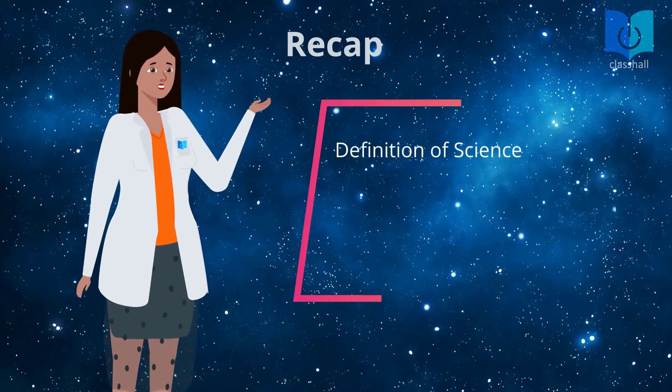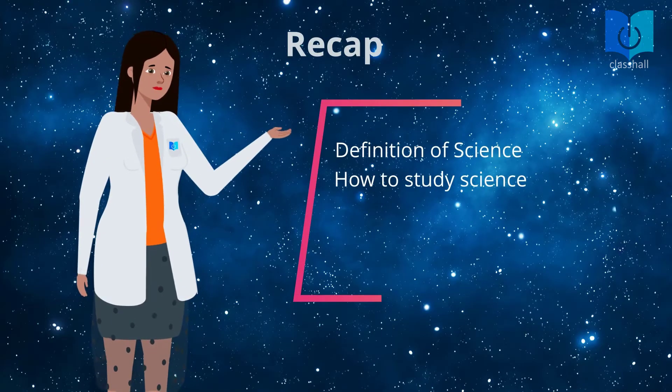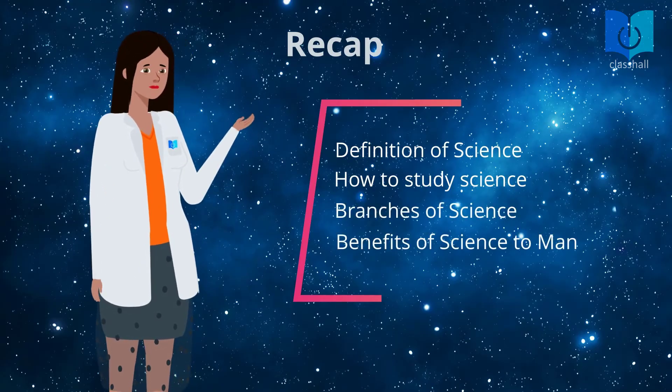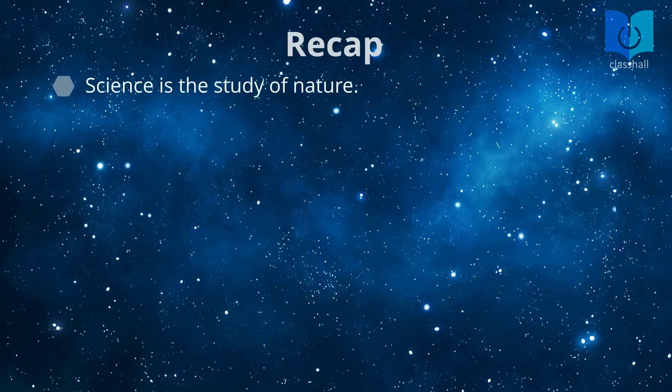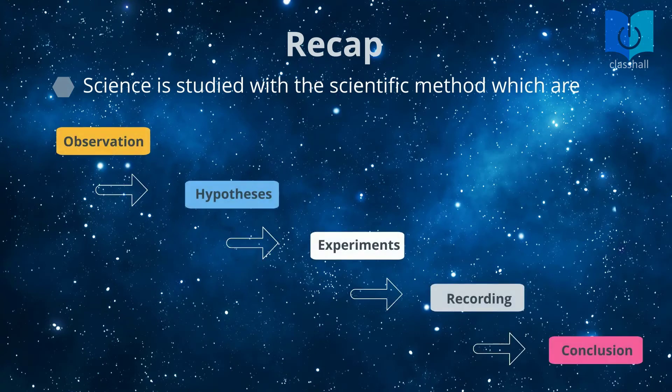So far we have discussed the meaning of science and how we study science. We have also learned the different branches of science and the importance or benefits of science to man. Recall that science is the study of nature. Science is studied with the scientific method which includes observation, hypothesis, experiments, recording, and conclusions.